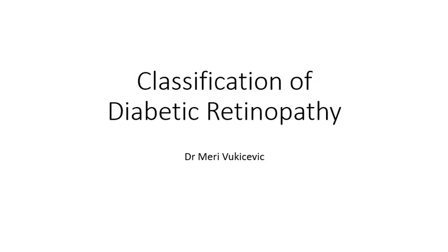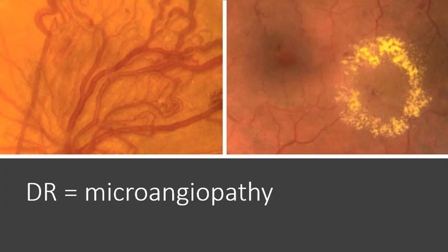Hi, my name is Mary Vukicevic and this presentation is about the classification of diabetic retinopathy. Diabetic retinopathy is a microangiopathy which shows features of microvascular occlusion and leakage. You should be familiar with the signs of occlusion and leakage in the retina before you come to understand the pathogenesis and signs of diabetic retinopathy.